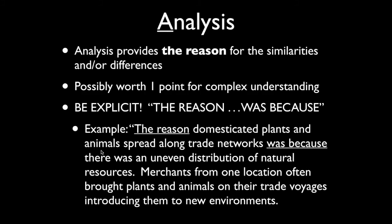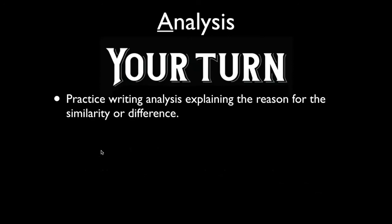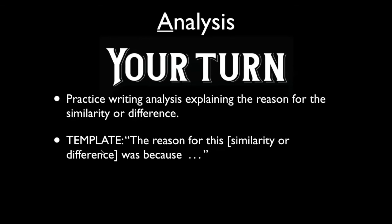An example: 'The reason domesticated plants and animals spread along trade networks was because there was an uneven distribution of natural resources. Merchants from one location often brought plants and animals on their trade voyages, introducing them to new environments.' That provides a reason why there was similarity in the spreading of domesticated plants and animals on both the Silk Road and Indian Ocean network. Now it's your turn — practice writing analysis using the template: 'the reason for this similarity/difference was because...'